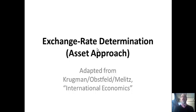Today I'm going to talk about exchange rate determination using the asset approach. This comes from the well-known Krugman-Obstfeld-Melitz International Economics textbook, which I teach in my International Monetary Theory classes. It's a pretty good model for understanding what causes exchange rates to move up and down based on both the fundamentals, macroeconomic determinants, as well as expectations, which are a big cause of those movements.